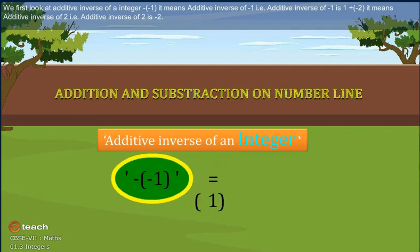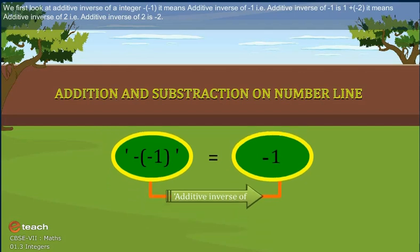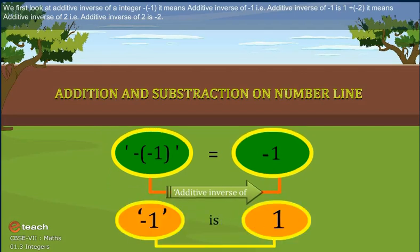Minus bracket minus 1. It means additive inverse of minus 1. That is, additive inverse of minus 1 is 1.